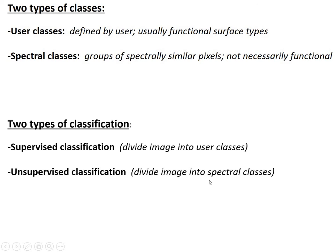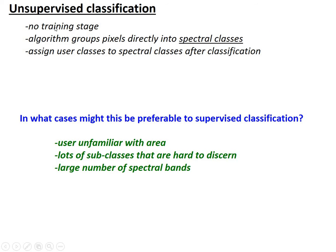The computer basically assigns each pixel into a group with pixels that are similar to it. We can tweak how many classes we want, but we don't give it any a priori information about what those classes look like spectrally. So unsupervised classification has no training stage — it goes right into spectral classes — and typically the user will then assign the spectral classes into user classes at the end, saying for example that class 1 is grass, or that classes 1 and 2 are both grass.